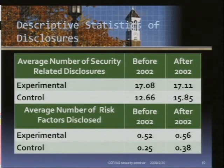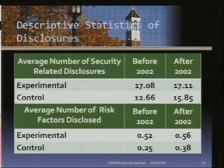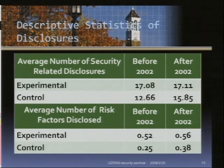Here are the descriptive statistics of our disclosures. The average number of disclosures for the experimental group, or the breached companies, increases after year 2002 due to the Sarbanes-Oxley Act, because it mandated this kind of disclosure. The average number of risk factors disclosed also increases on average.